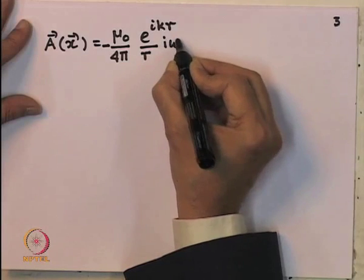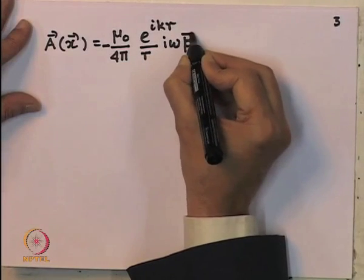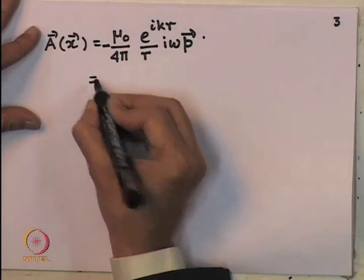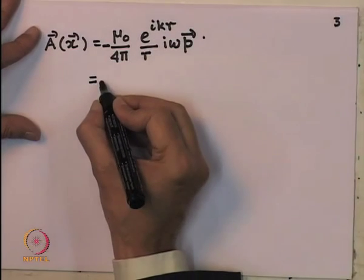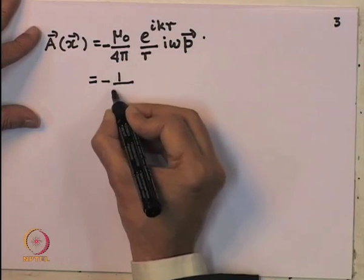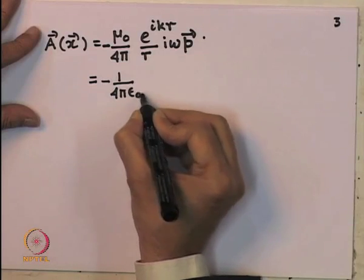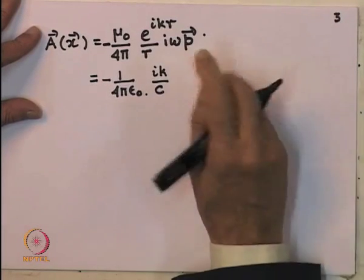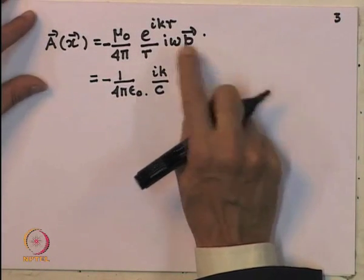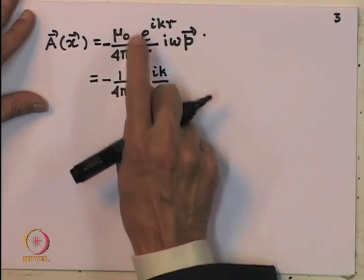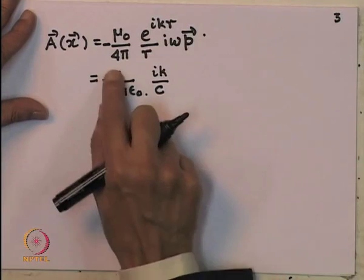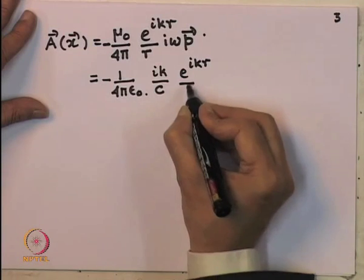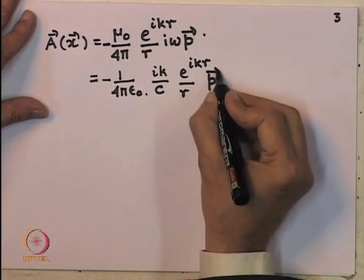Using ω/c = k and μ₀ε₀ = 1/c², this can be rewritten as A(x) = (1/4πε₀)(ik/c)(e^(ikr)/r) p. This is the dipole approximation to the vector potential.